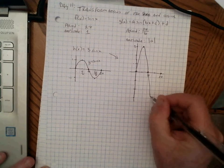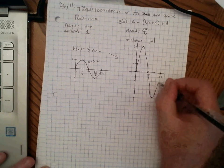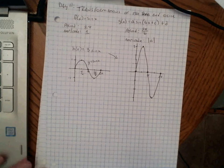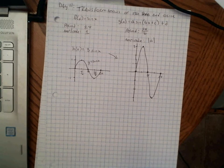It still looks like a wave — don't make jagged saw teeth. That's one cycle of the curve: h of x equals 3 sine x.